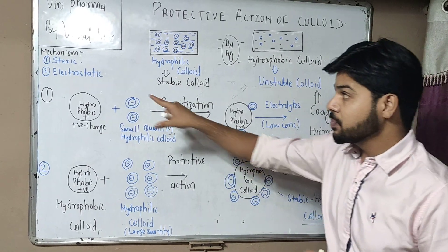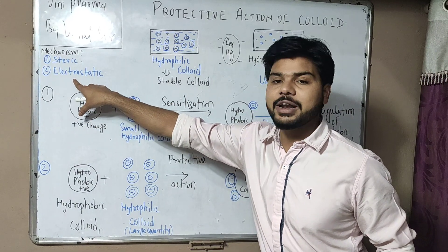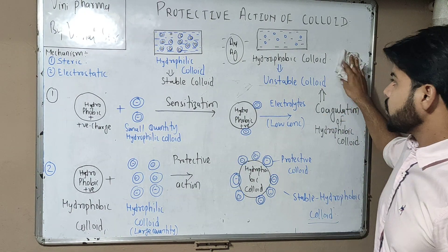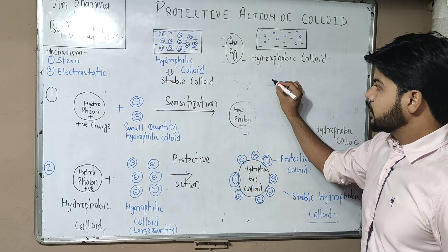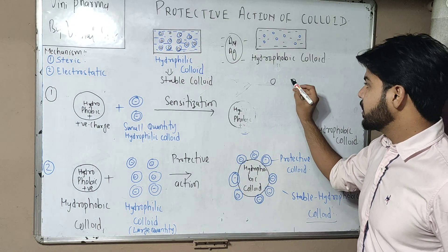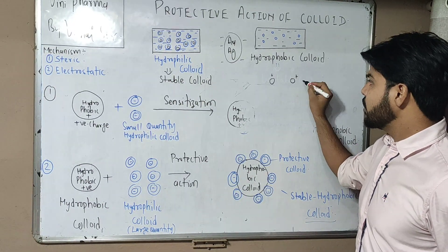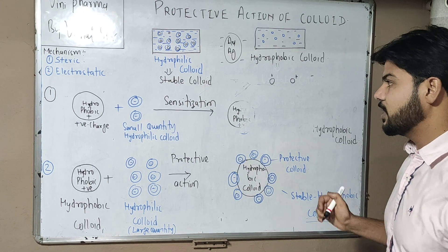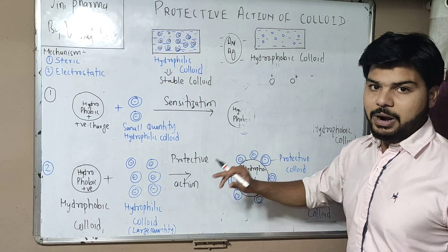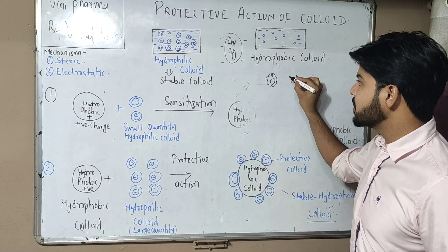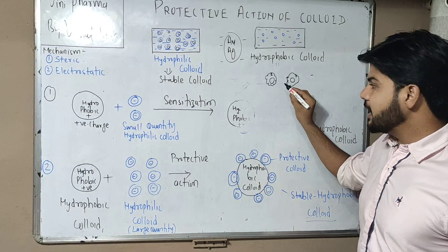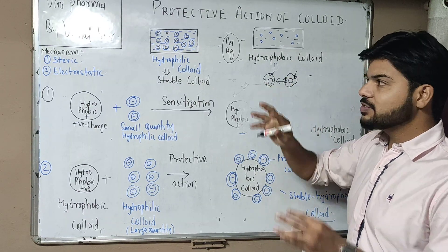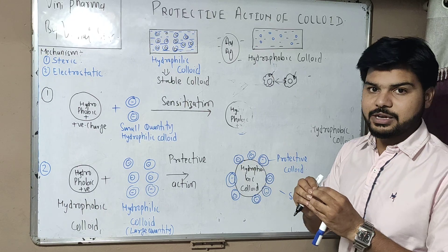There are two factors to look at: the mechanism of steric stabilization and electrostatic stabilization. The steric mechanism is strong for hydrophilic colloids. When we add hydrophilic colloids, they create layers around the hydrophobic particles. When electrolyte is added, it does not affect the system because the particles are kept far apart — this is the steric or space-surface support.